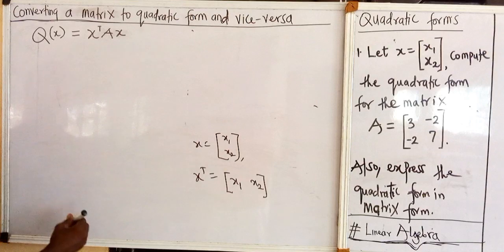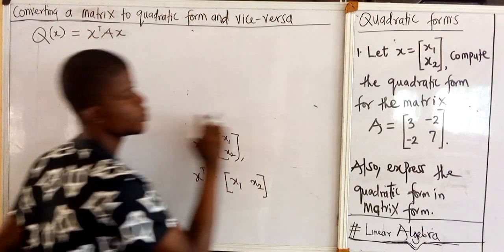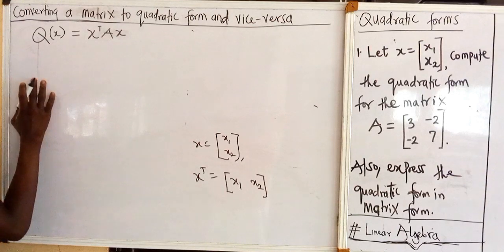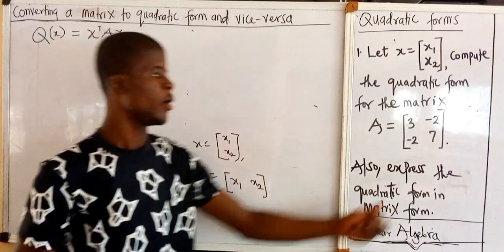A here is the matrix of the quadratic form. So let's see how we are going to achieve the quadratic form of this matrix.